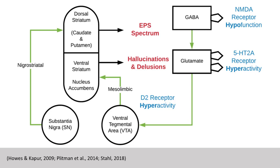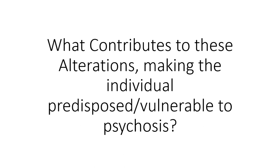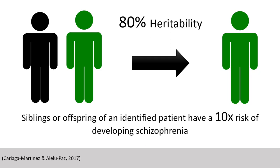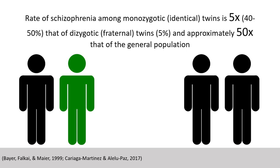Next, let's look at what contributes to these alterations, making the individual predisposed or vulnerable to psychosis. As alluded to in the prior lecture, heritability does not account for the full picture of enduring psychotic illness. At best, enduring psychotic illness is estimated to be 80% heritable. Siblings or offspring of an identified patient have a 10 times increased risk of developing schizophrenia. The rate of schizophrenia among monozygotic or identical twins is 40 to 50%, compared to 5% among dizygotic or fraternal twins, and approximately 50 times that of the general population.